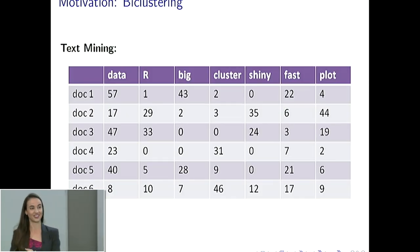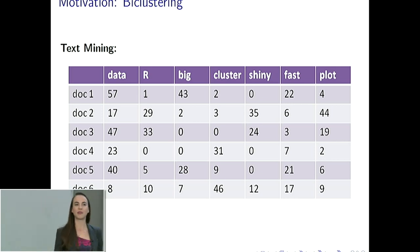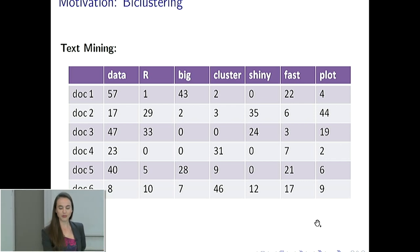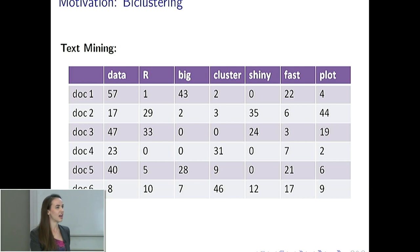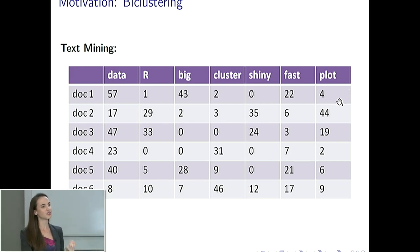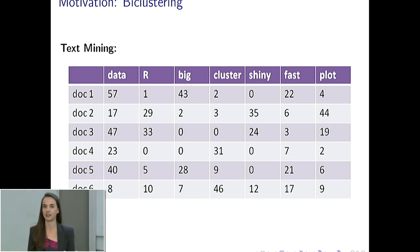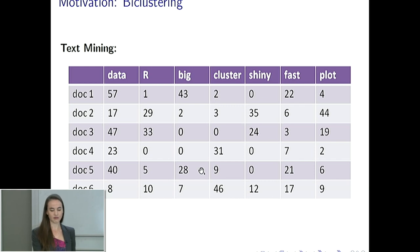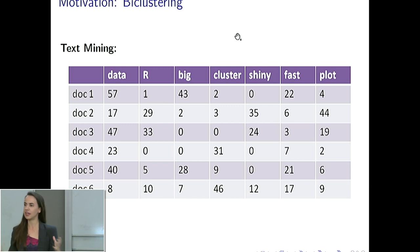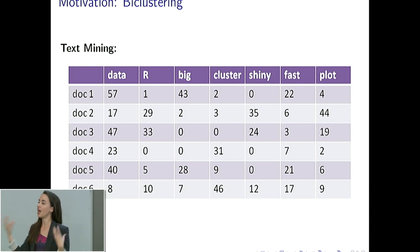Another area where bi-clustering comes up is text mining. In text mining, there's a model called the bag of words model that gives you a document-by-term matrix. I have six fictional documents and some words — all of which you'll probably hear in this talk — and the entries are the number of times each word appeared in each document. Bi-clustering is important here because we might want to find all documents related to a particular topic like Shiny, and also understand what words differentiate those topics.